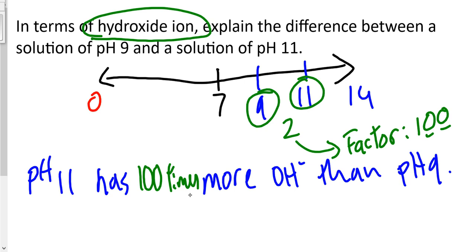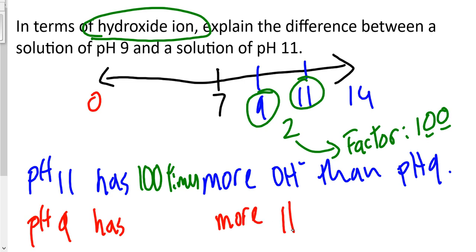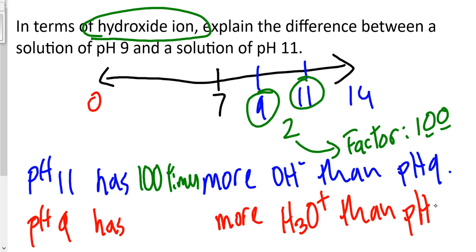Think about the question: what if the question asked about hydronium ion instead? Then pH 9 has more hydronium ion than pH 11. The factor is still the same — 100 times.